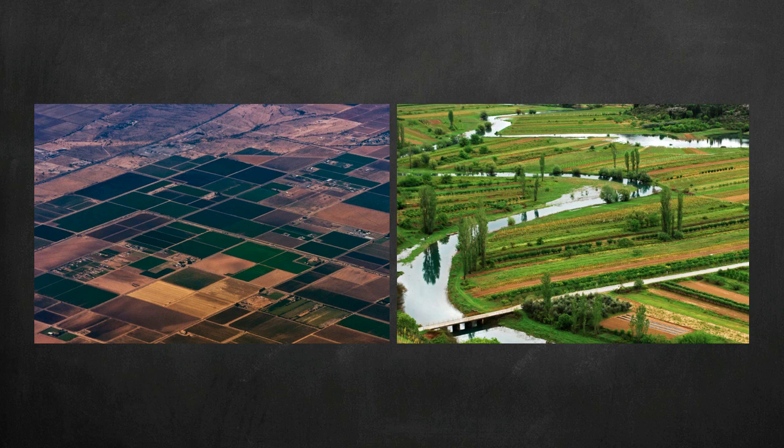But what if your field is irregularly shaped, like this? If you can find a function to model both sides of the perimeter, you can use area between curves to find the area of your field.